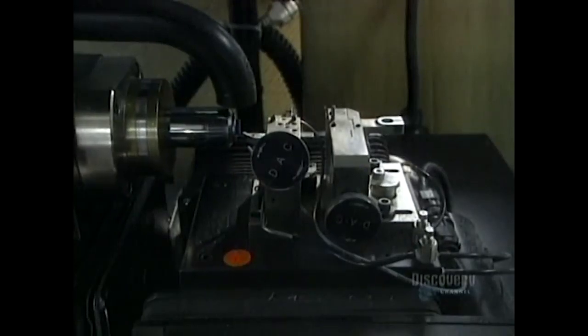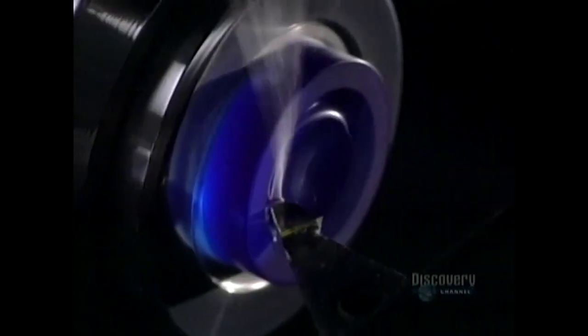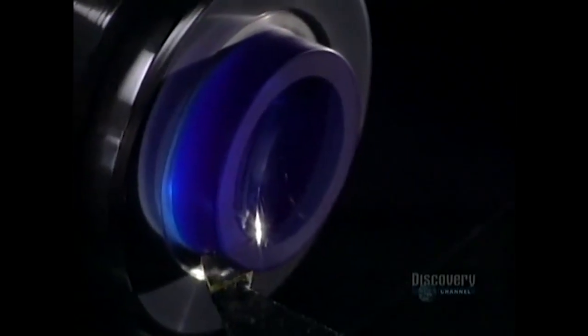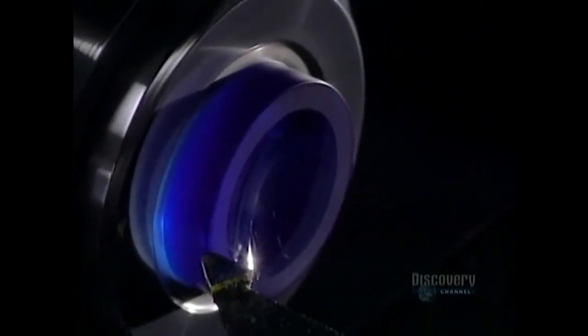They begin by shaping the inner curvature of the lens. This digital lathe, rotating at 6,000 revolutions per minute, is equipped with an industrial diamond. It shapes the inner surface, the part that touches the cornea.